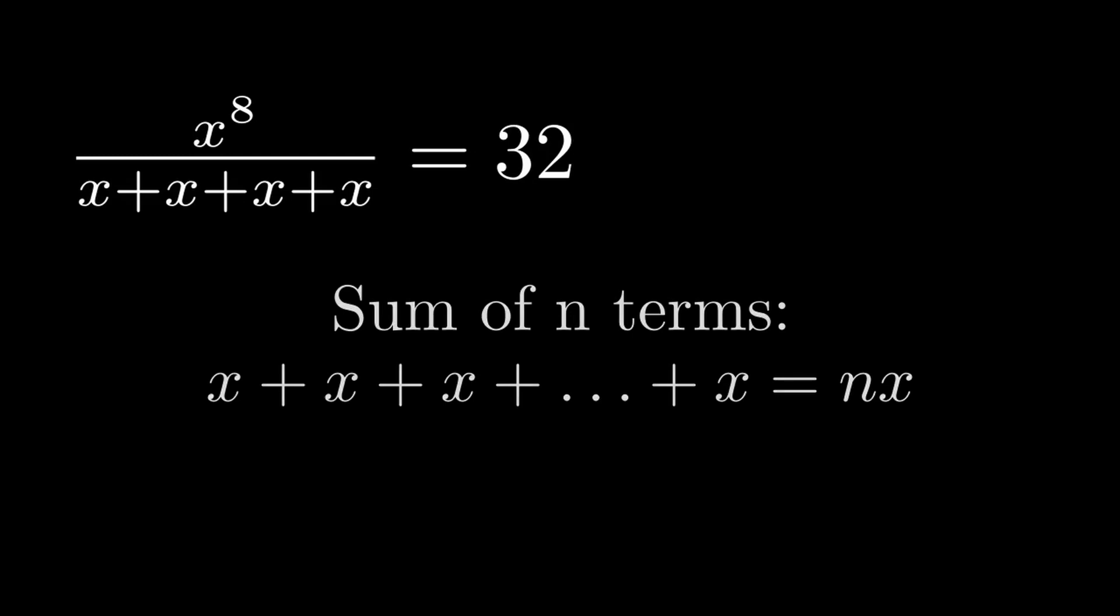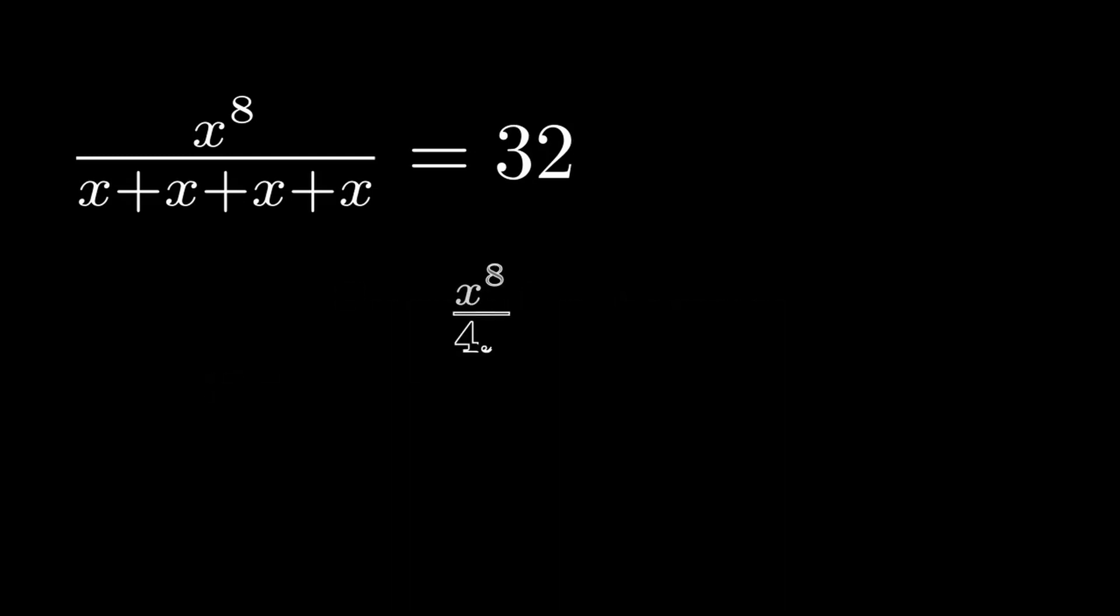So, as we have 4x's being added together, we can rewrite this fraction as x raised to the 8th power divided by 4x is equal to 32.